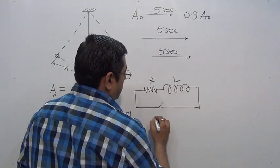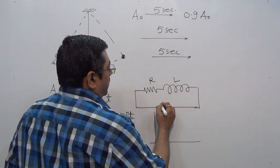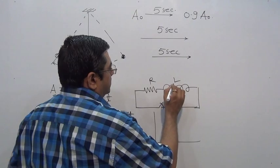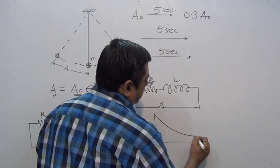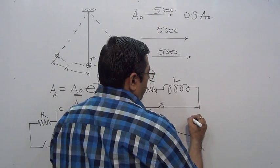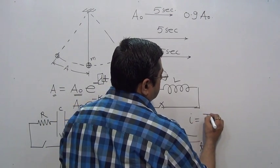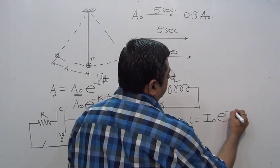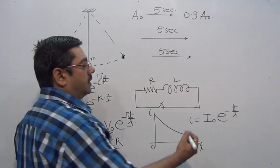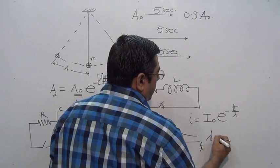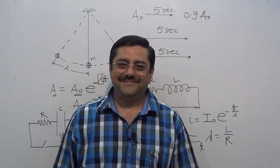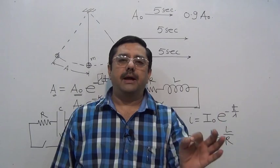Decay of current in an inductor: when an inductor is allowed to send current through certain resistance after being charged, the current decay is exponential. The equation of decrease of current is also given by the same formula: I = I₀ e^(-T/λ), where λ is called decay constant, denoted by L/R.